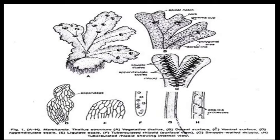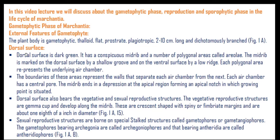All the details are mentioned within these diagrams. The dorsal surface is dark and green in color. It has a conspicuous midrib and polygonal areas called areoli. The midrib is marked on the dorsal surface by a shallow groove and on the ventral surface with a low ridge in a triangular shape. Each polygonal area represents underlying air chambers.